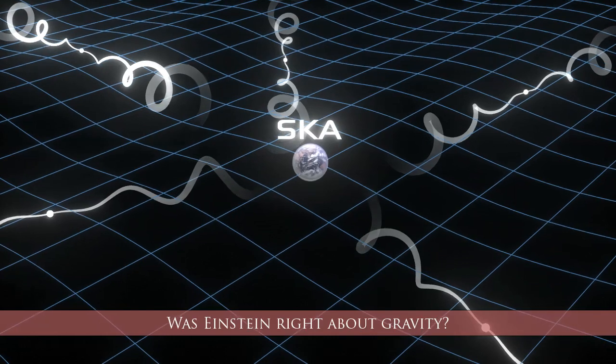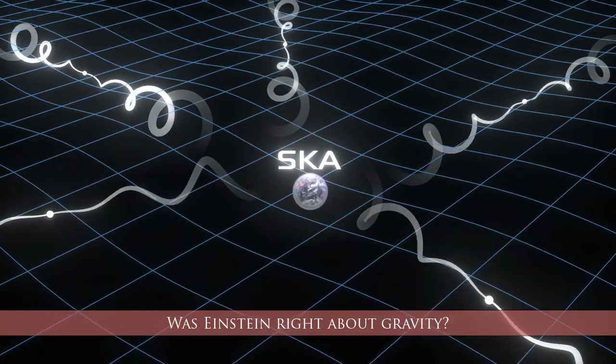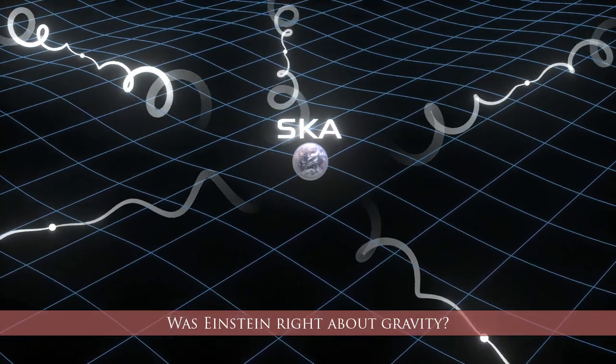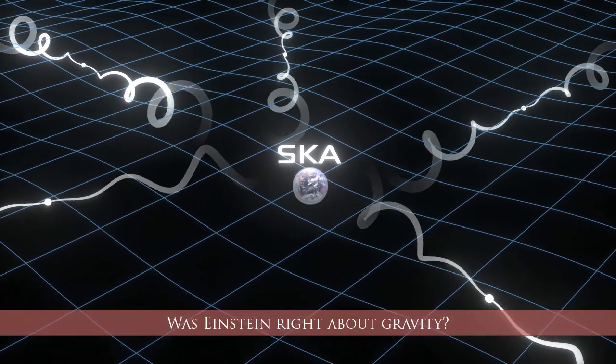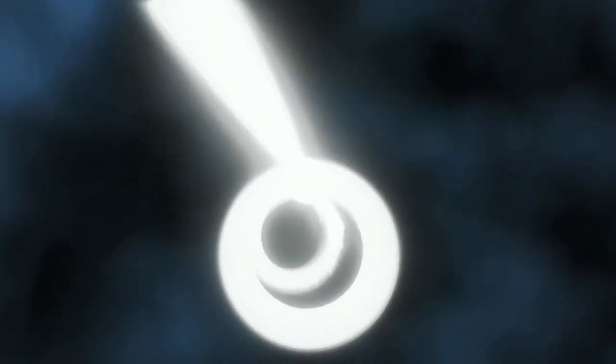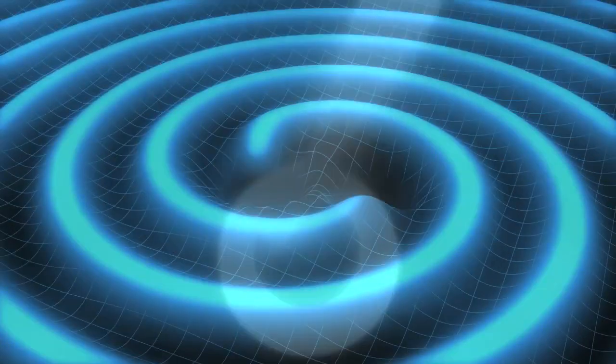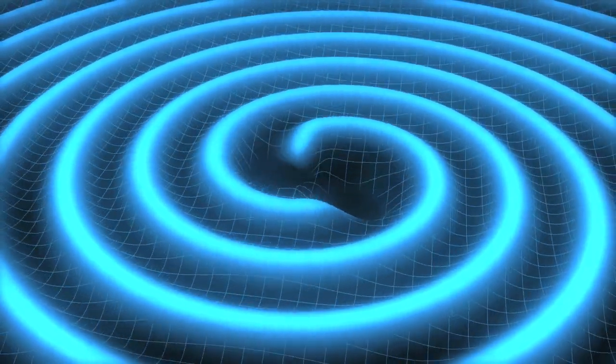The SKA will search for gravitational waves, ripples in the fabric of space-time, by monitoring pulsars, the collapsed spinning cores of dead stars. These gravitational waves are generated when supermassive black holes interact.